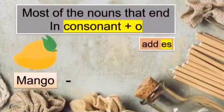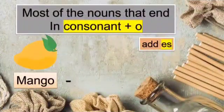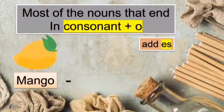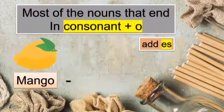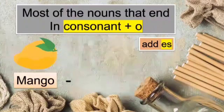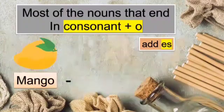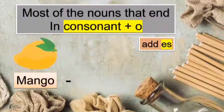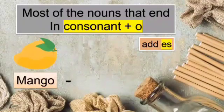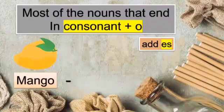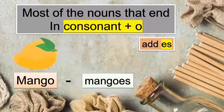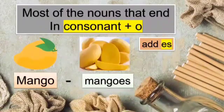Rule 6: most nouns that end in consonant plus O — we add ES at the end to make them plural. For example, mango — before the O is a consonant, so we add ES. One mango, two mangoes.